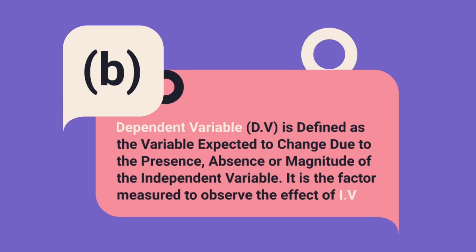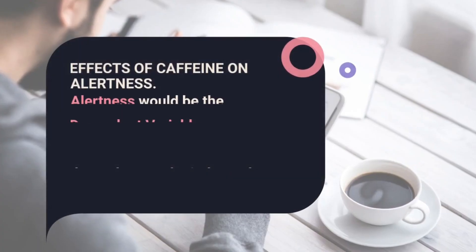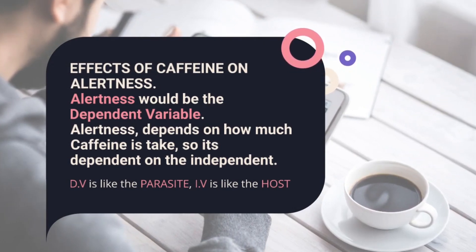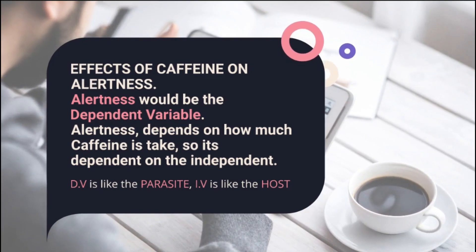A dependent variable by definition is a variable which is expected to change as a result of the presence, absence, or magnitude of the independent variable. It is the factor the researcher measures to observe the effect of the independent variable. Using the same example — effects of caffeine on alertness — alertness will be the dependent variable, because alertness is the one which is expected to change and is the one we are going to be measuring. Alertness depends on how much caffeine is taken.